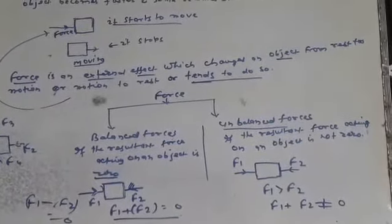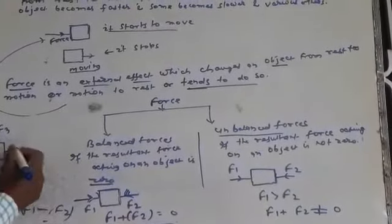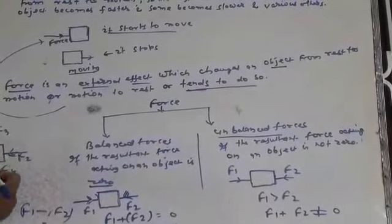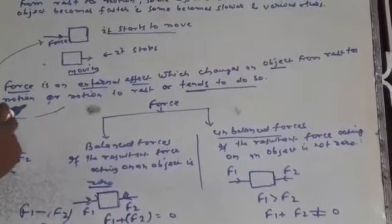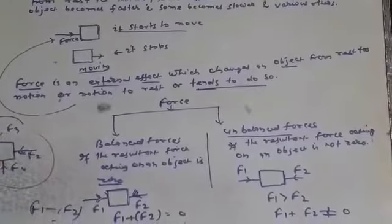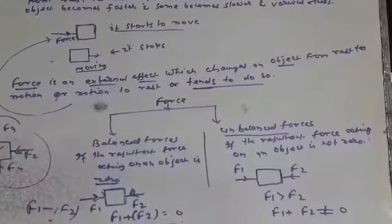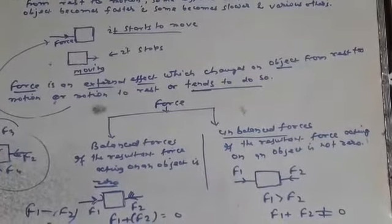There will be more than two forces. A force in this direction, another force in opposite direction, a force from up to down and down to up. So maybe F1 plus F2 plus F3 plus F4. Total result that is zero. This means this object is under the effect of a Balanced Force.